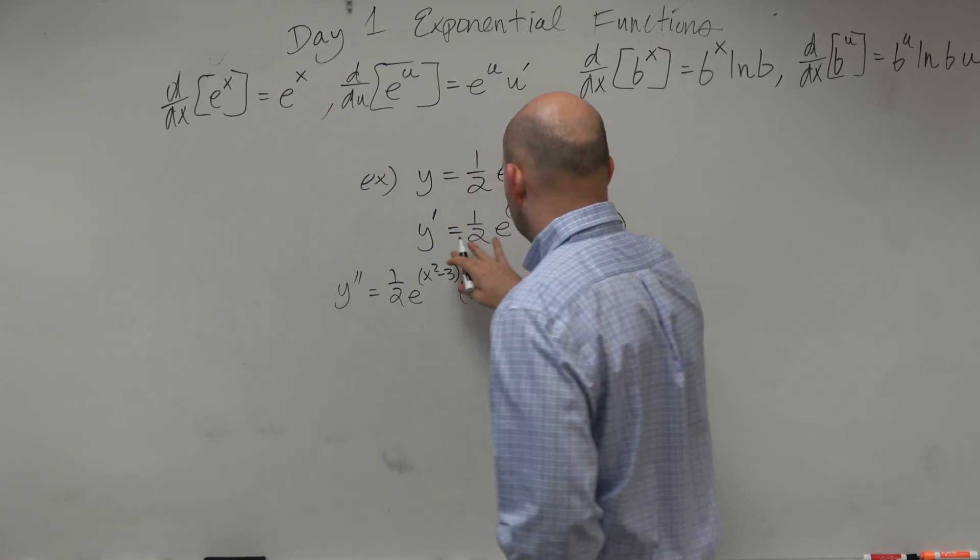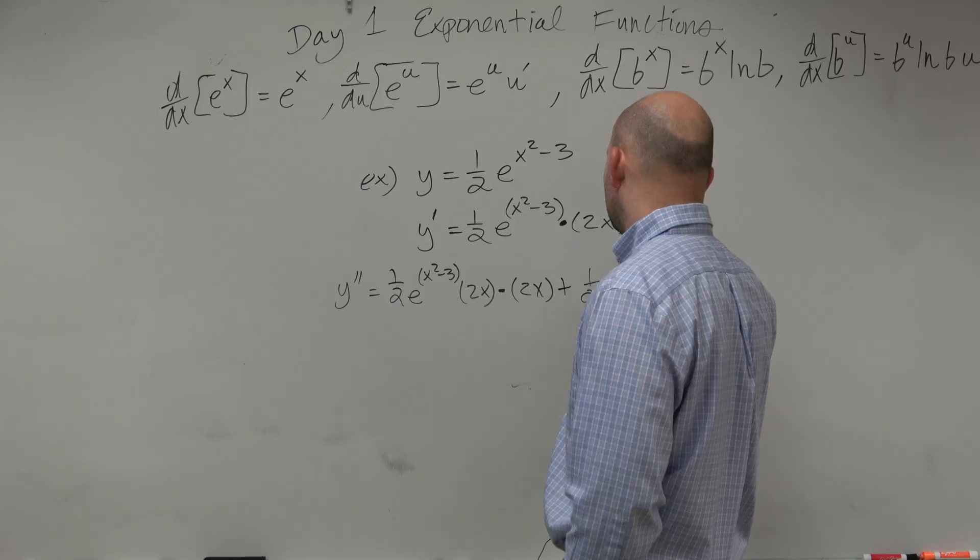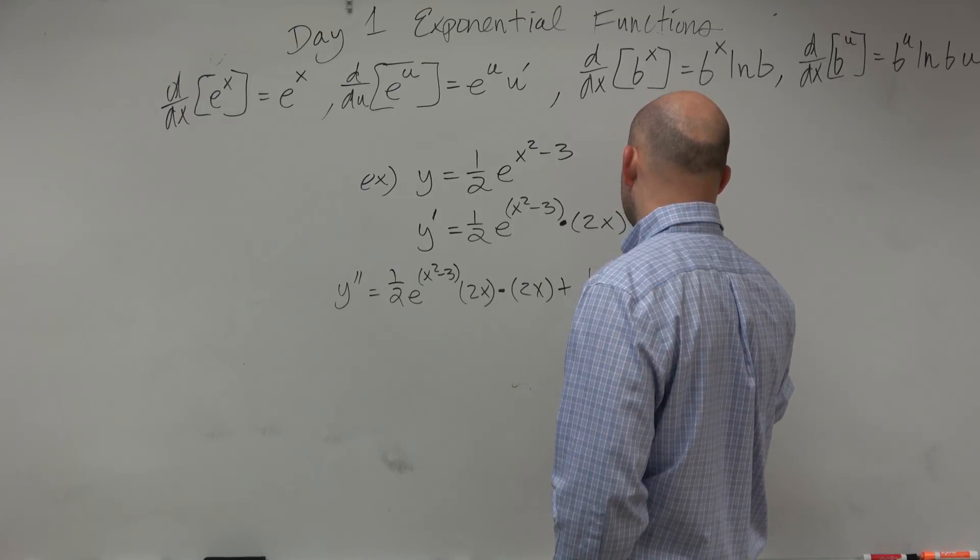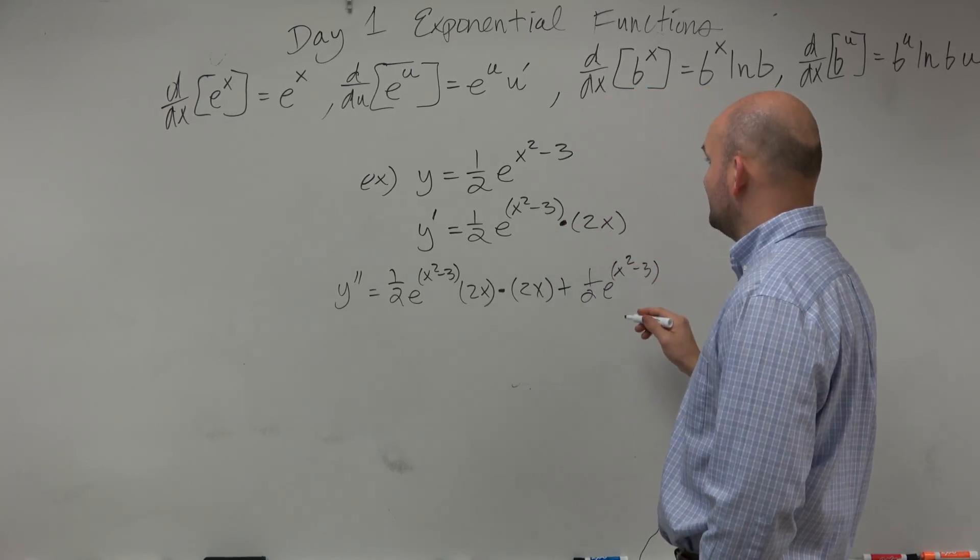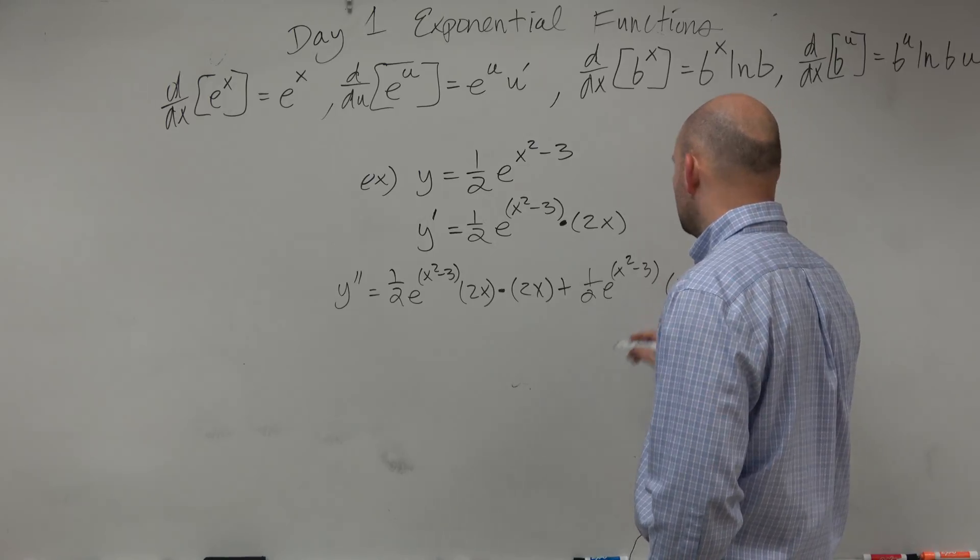Add that to my derivative of my first function, e to the x squared minus 3, and then times the derivative of the second function, which would be times 2.